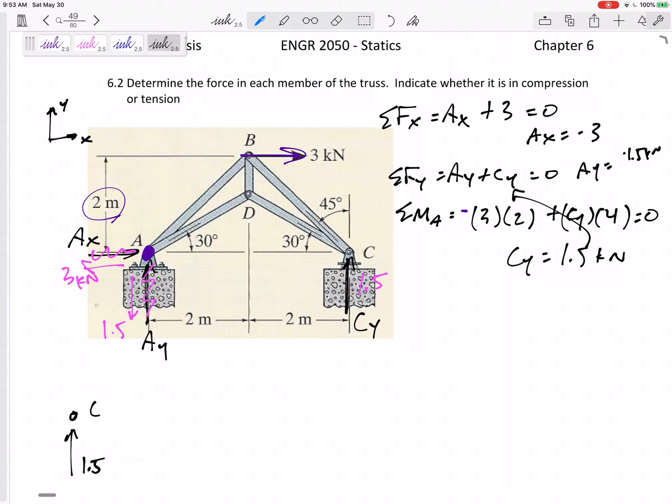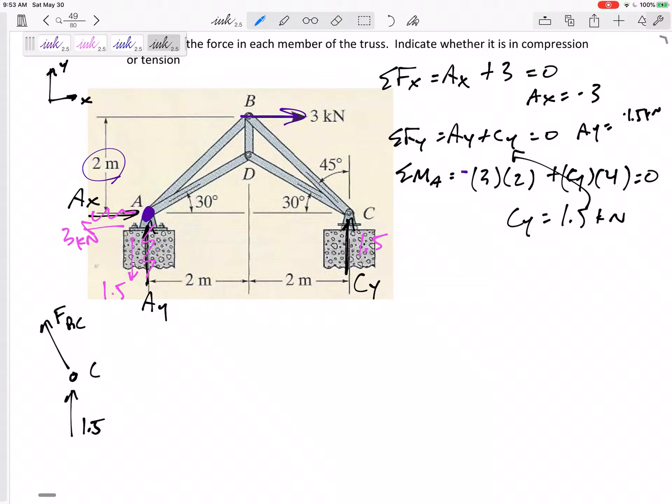Starting at C, I already know I have that 1.5 kilonewtons right there from the roller. I have a force in BC that is at 45 degrees. I don't know its value, but I know it's at 45 degrees. I guessed tension. I always like to guess tension. Then I've got a force DC that is at 30 degrees right there. And I guess tension as well. So draw those forces inside the members pulling at the joints. If they were ropes pulling at joint C. Your free body diagram is not a free body diagram of the members. It's a free body diagram of the joints.